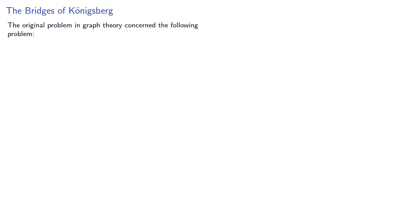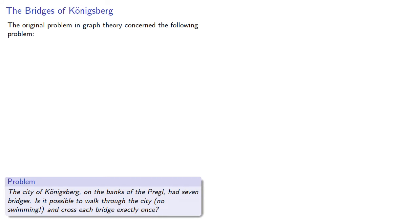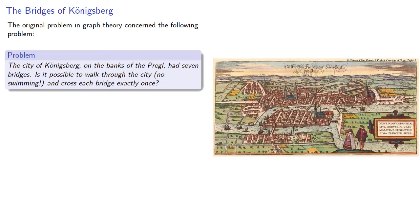The original problem in graph theory concerned the following problem. The city of Königsberg, on the banks of the Pragel River, had several bridges. Is it possible to walk through the city, no swimming, and cross each bridge exactly once?